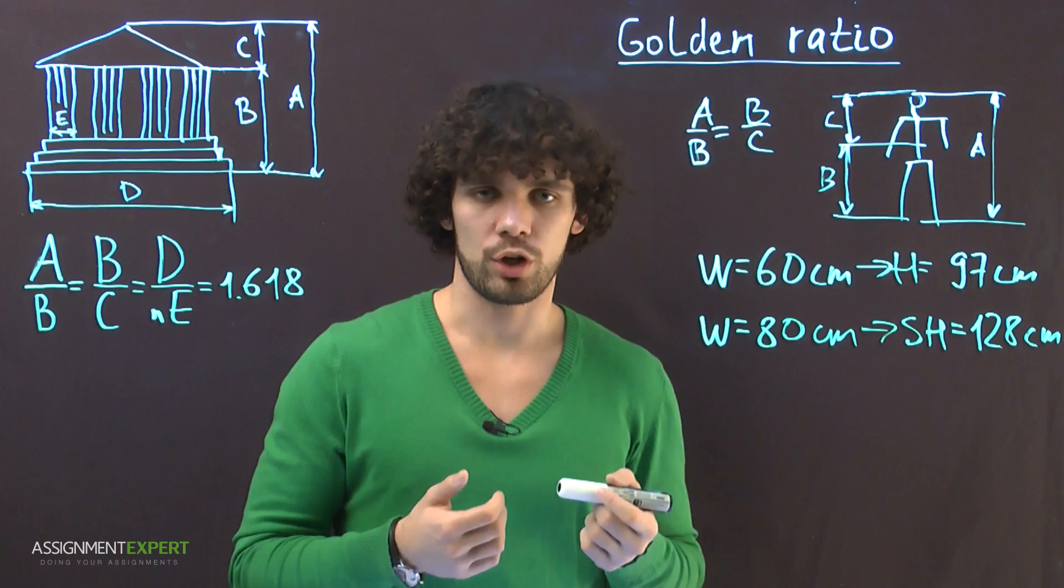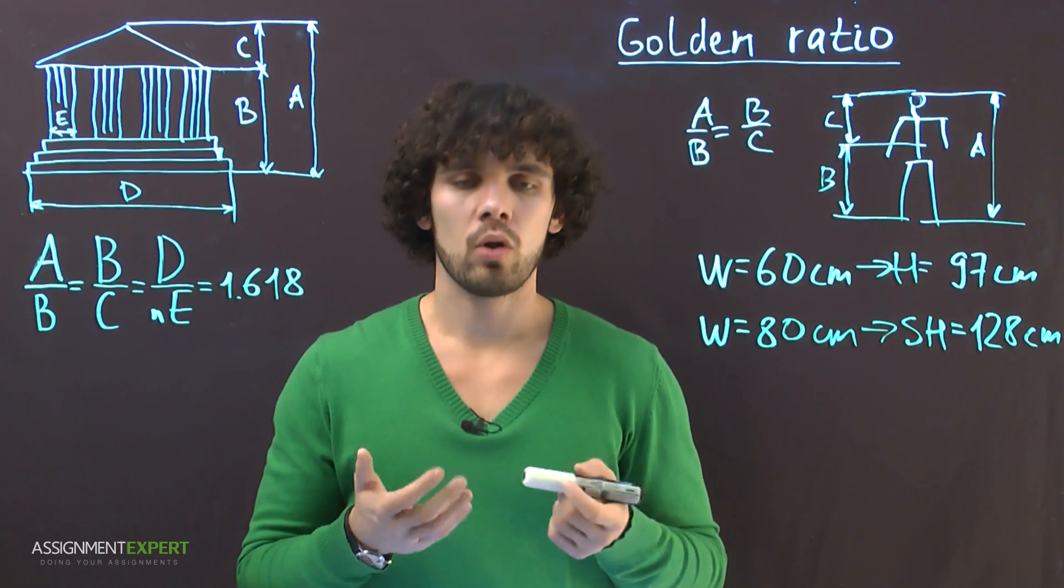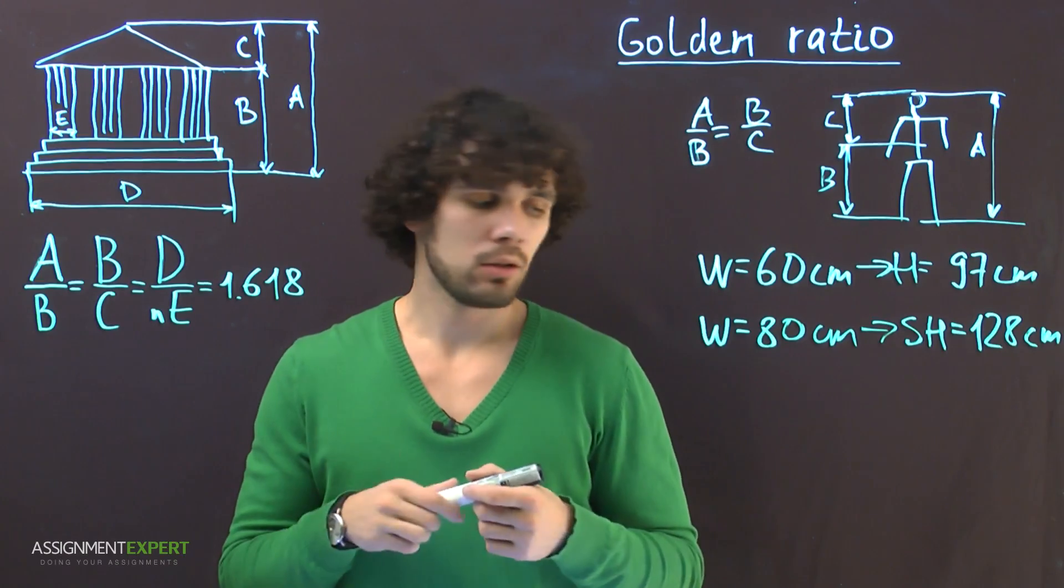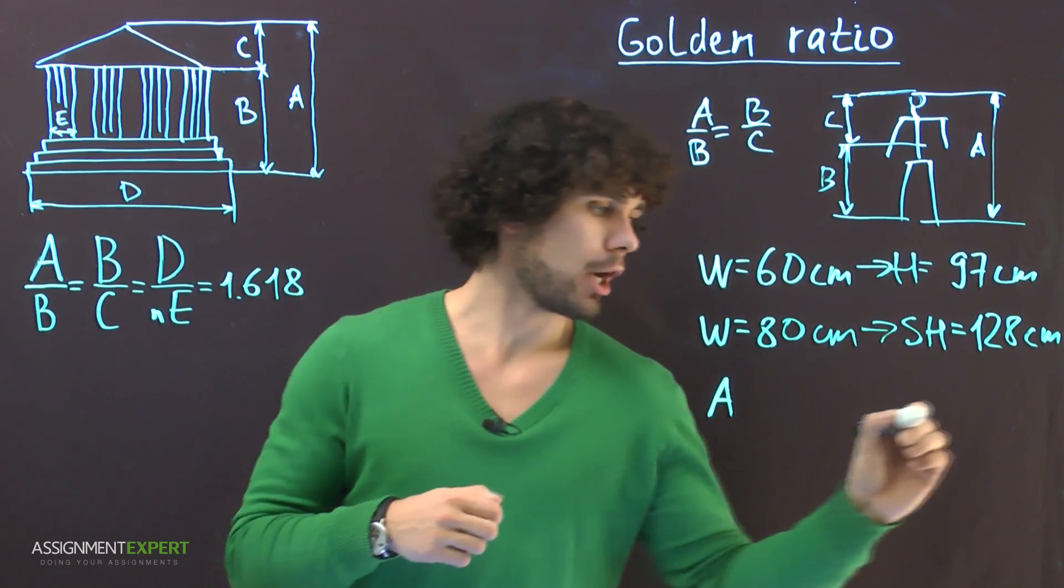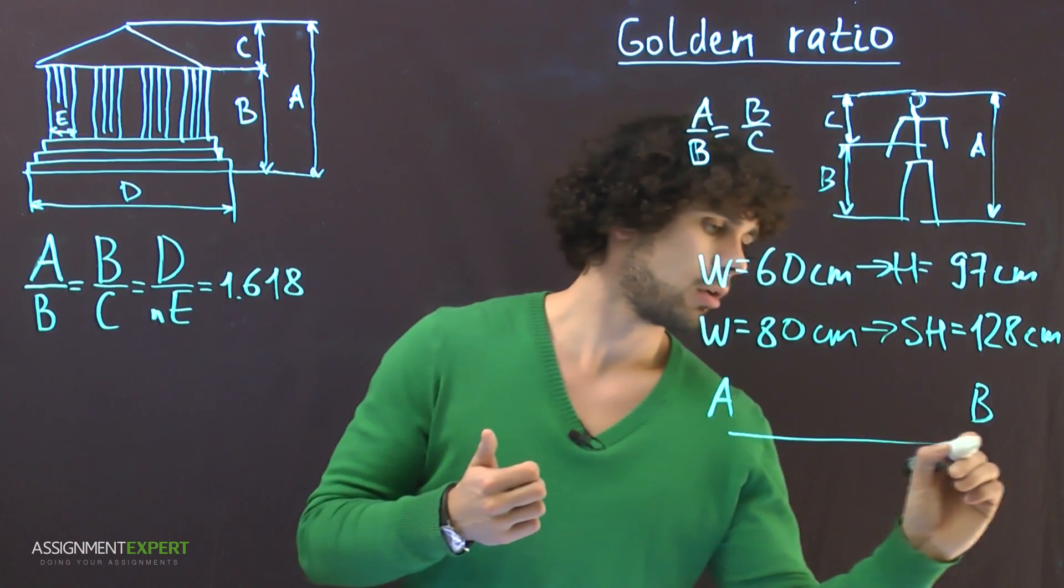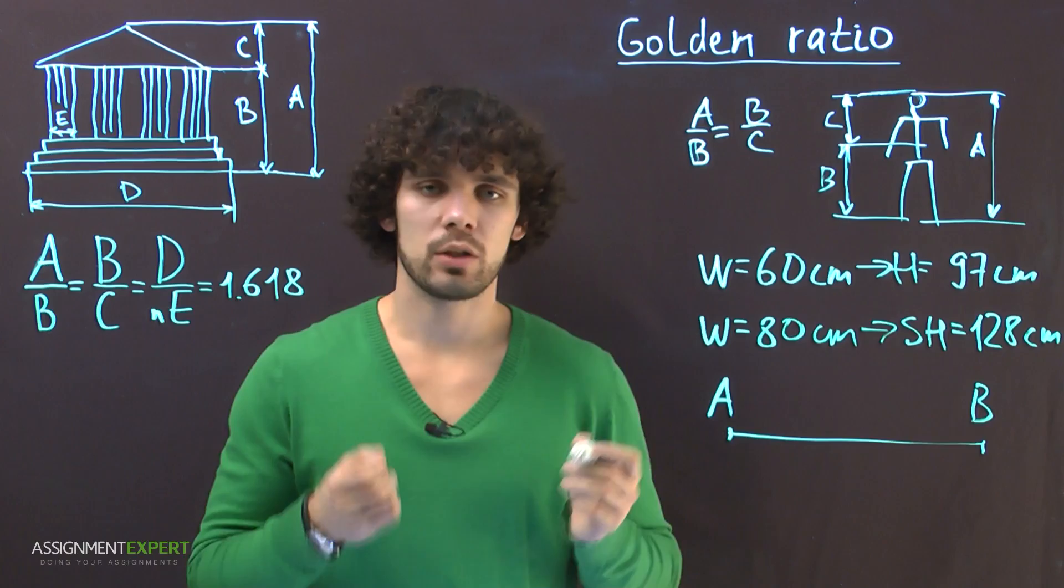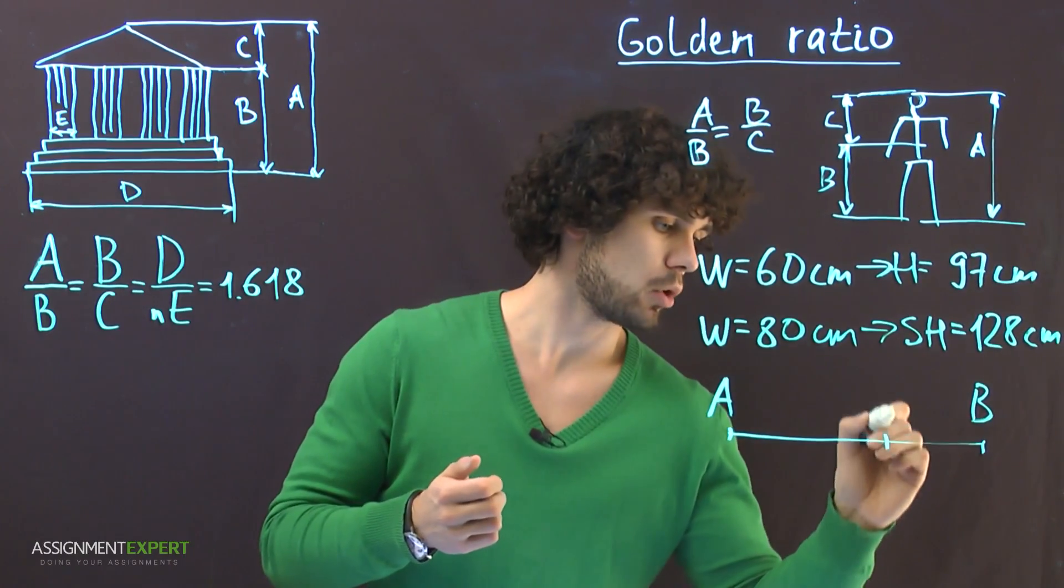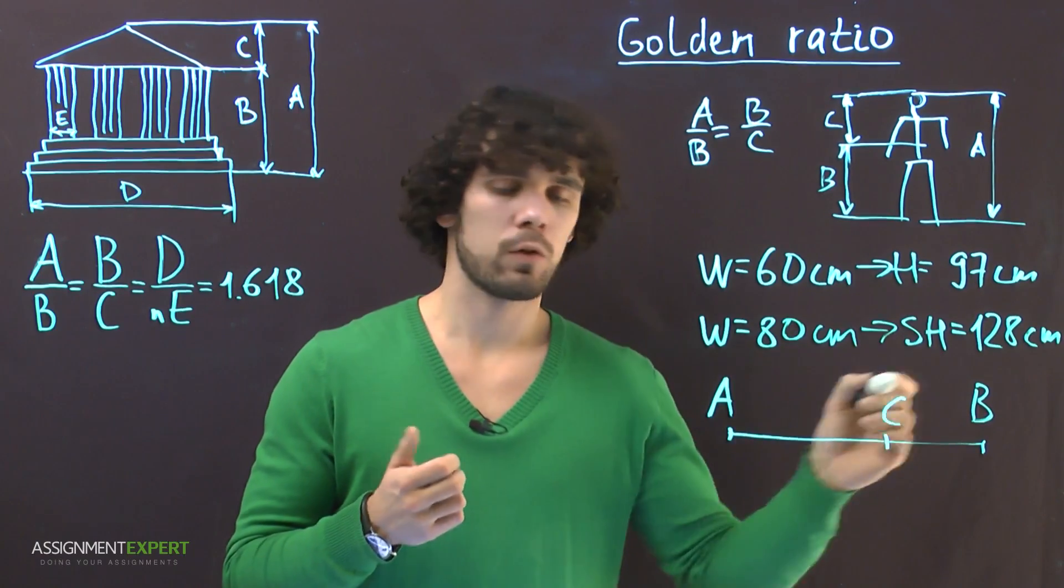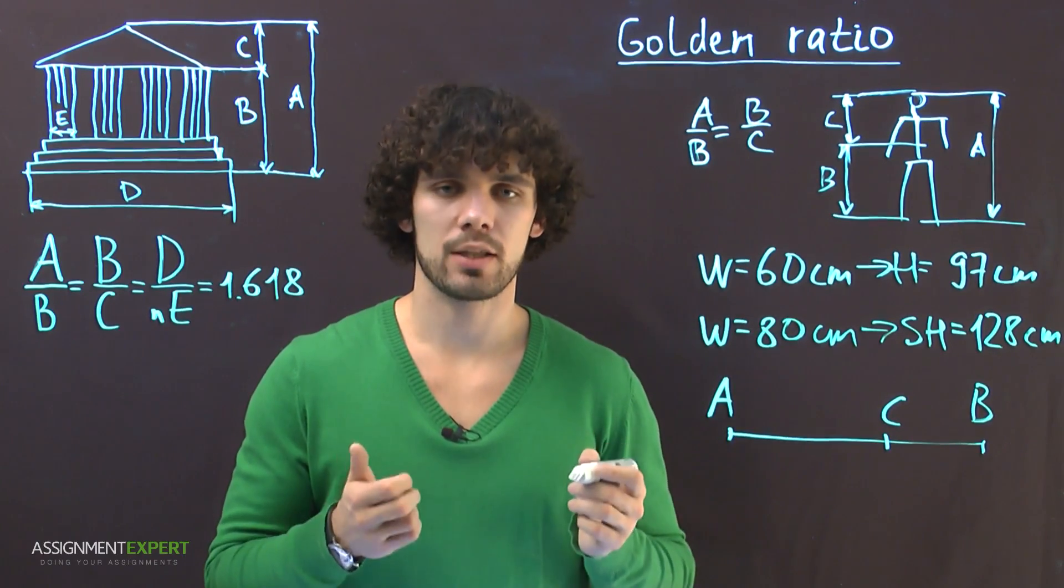Other example comes from team sports. Suppose you play basketball and you want to give a bounce pass to your teammate. Imagine you're A and your buddy is B on the interval we talked about in the beginning. The perfect way to give this pass is to hit this C spot on the interval. In this case, the ball will bounce off the floor perfectly and gets right into the hands of your partner.